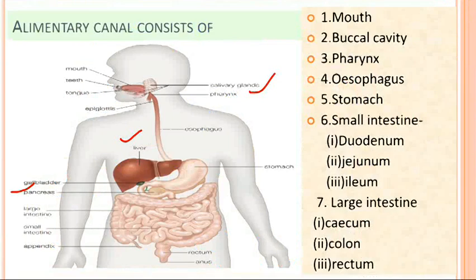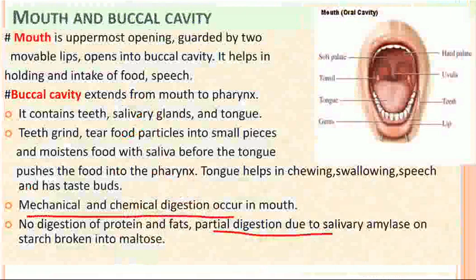Now let's deal with mouth and buccal cavity. The mouth is a slit-like aperture — it is the uppermost opening, guarded by two movable lips, upper and lower. Lips help in holding the food and also aid in speech. The buccal cavity is an open space found between the teeth and the cheeks. It lies between two jaws — the upper one is fixed and the lower one is movable. It has a palate on the upper side, throat, tongue on the lower side, and cheeks on the lateral side; the jaws bear the teeth.